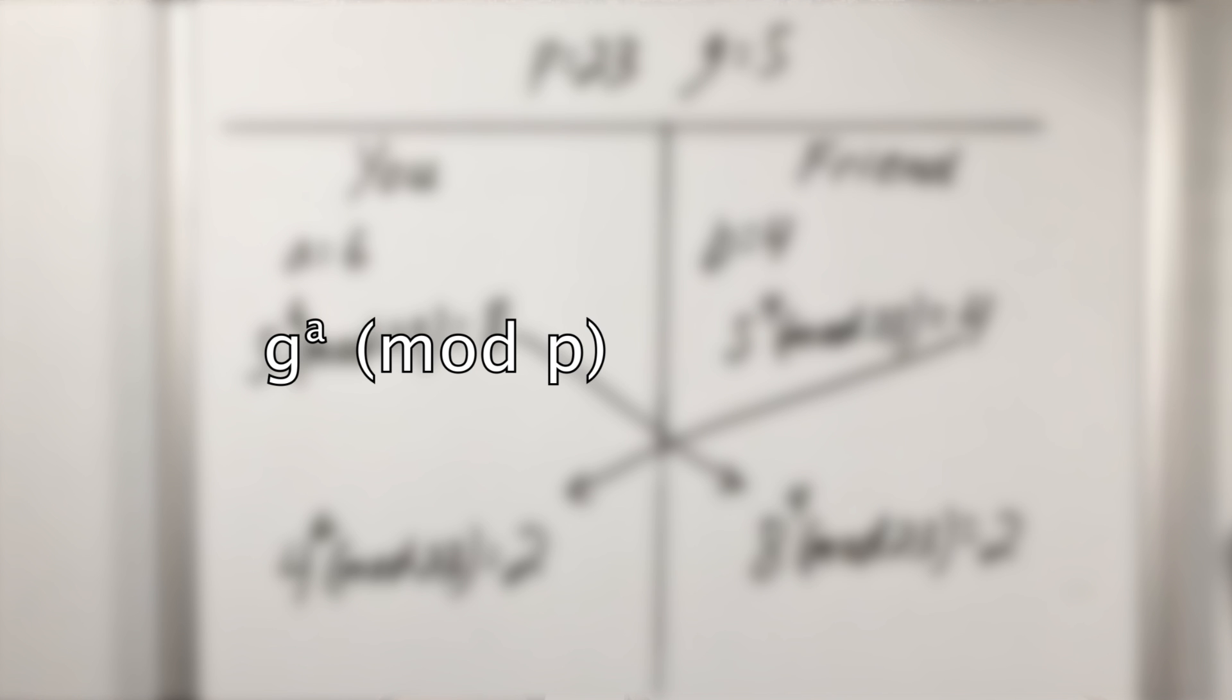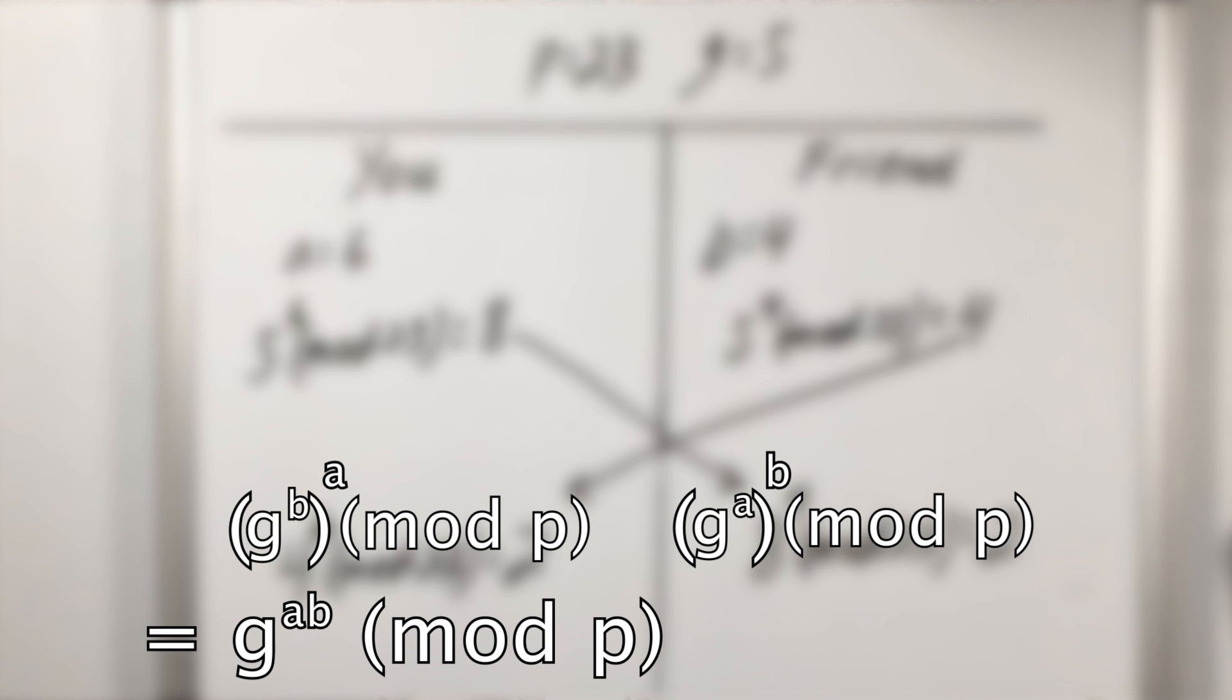I took our G value raised it to the A power and then sent that to my friend which he then raised to the B power. At the same time he took G and raised it to the B power sent it to me which I then raised to the A power and yes even with modular arithmetic these are going to get you the same answer and this number we agree will be our secret key.